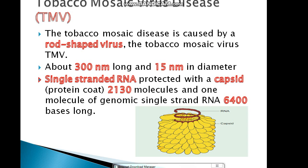The next topic is Tobacco Mosaic Virus (TMV), which is a very important topic from an exam point of view. It is a rod-shaped virus. The length is 300 nm and the diameter is 15 nm. The genome consists of single-stranded RNA. It contains 2,130 capsomeres, and the RNA is approximately 6,400 bases long.